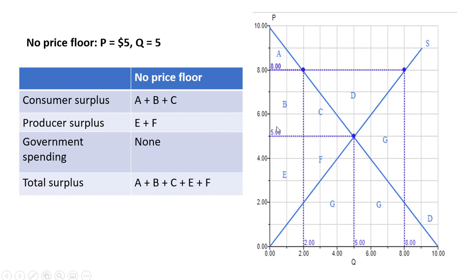Let's calculate consumer surplus, which is going to be the area between the height of the demand curve and the price that consumers pay, $5, up to that last unit purchased, which is the fifth unit. So we got A, B, and C. That area represents consumer surplus.